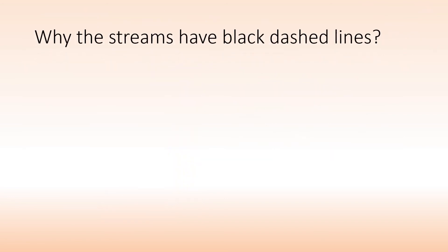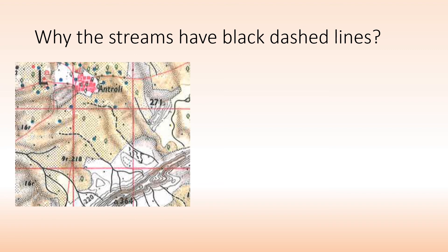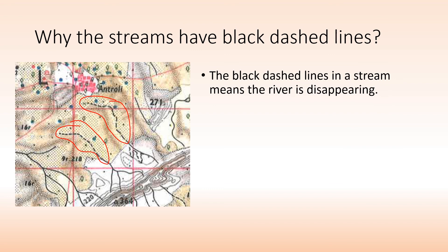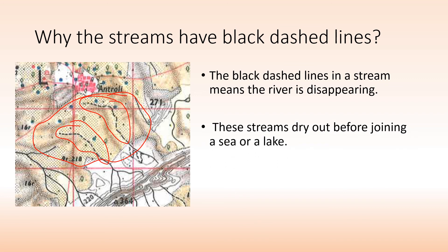Why do some streams have a black dash line? These black dashed lines represent disappearing streams. This area is sandy and does not receive much rainfall, so even during the rainy season, the sand soaks up the water and the river disappears after a certain distance. These streams dry out before joining a sea or lake.